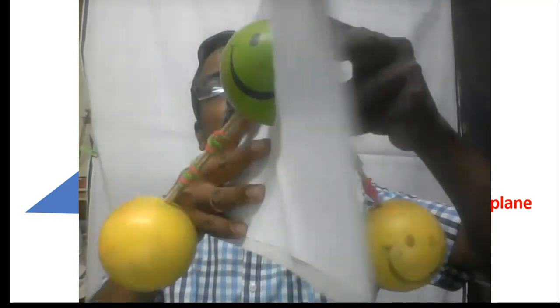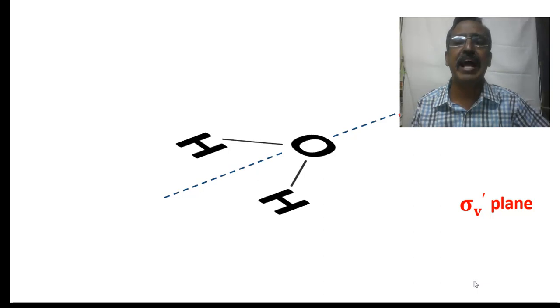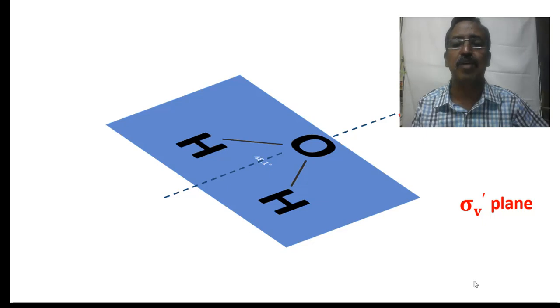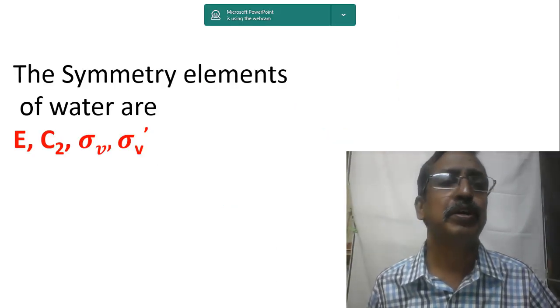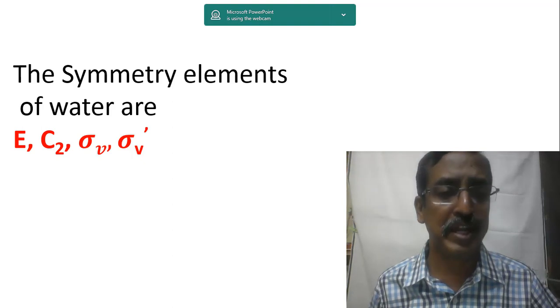The previous plane — the sigma v plane that cuts through the oxygen atom and bifurcates the two O-H bonds — can be visualized like this. Now we have seen the identity element E, the C2 axis, the sigma v plane, and the sigma v dash plane. The sigma v dash plane cuts through all the atoms and divides all atoms into two halves. These are the four symmetry elements present in the water molecule: E, C2, sigma v, and sigma v dash.